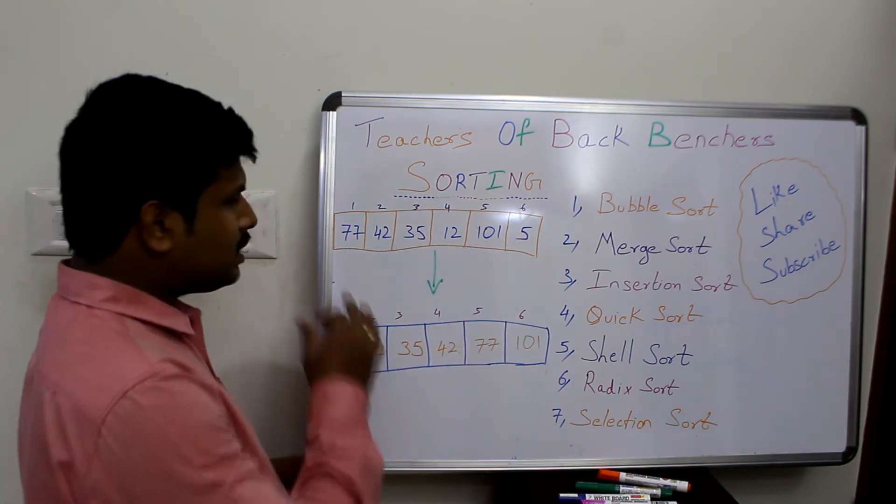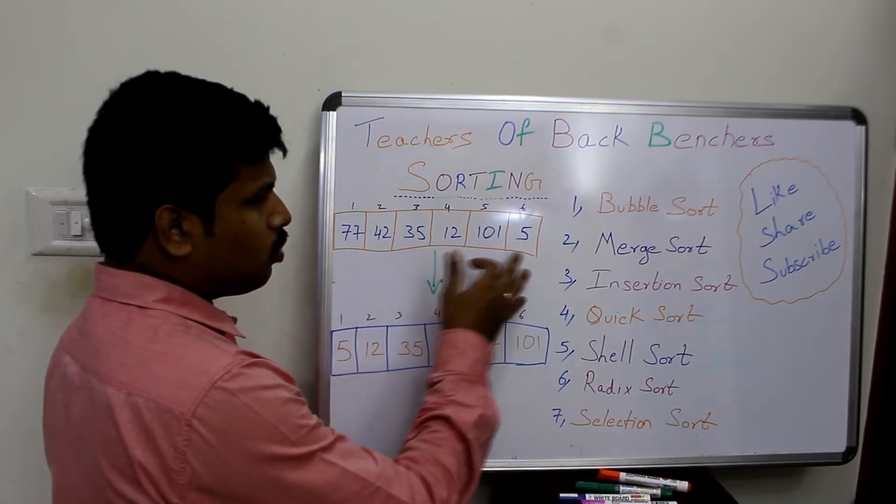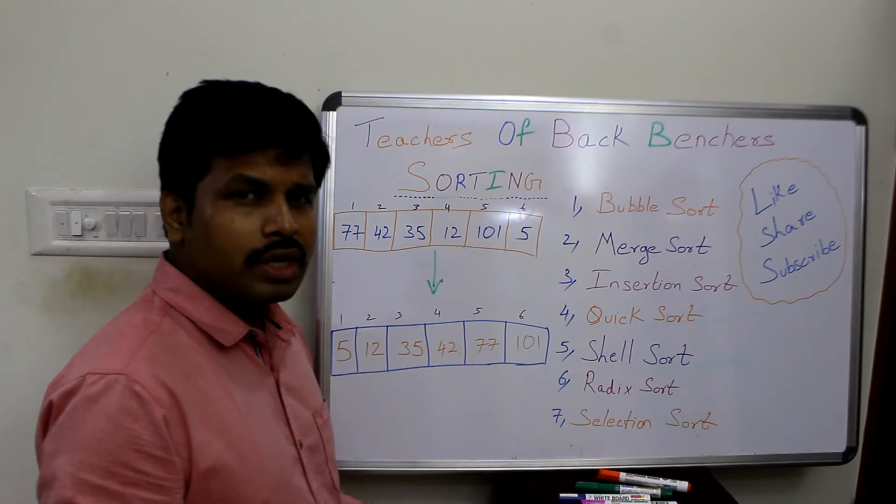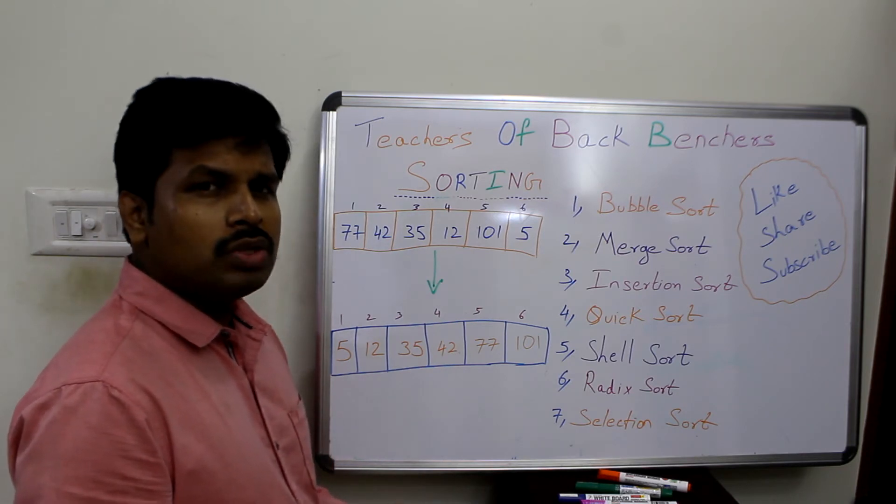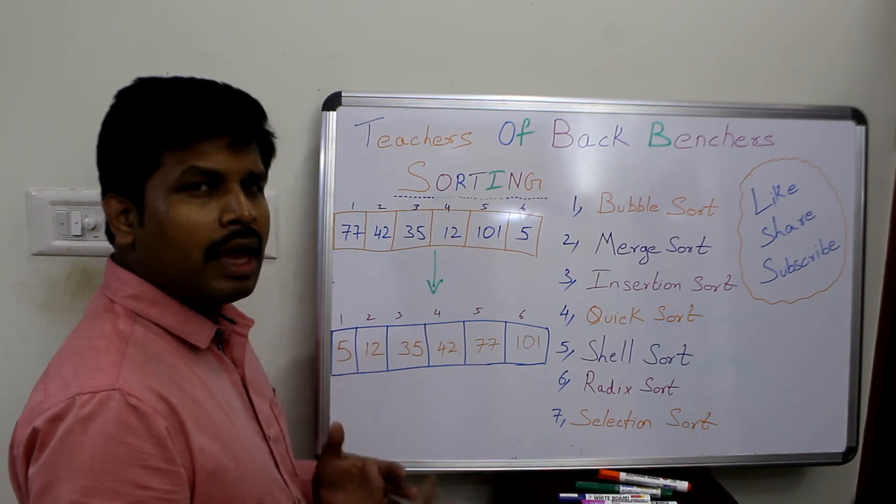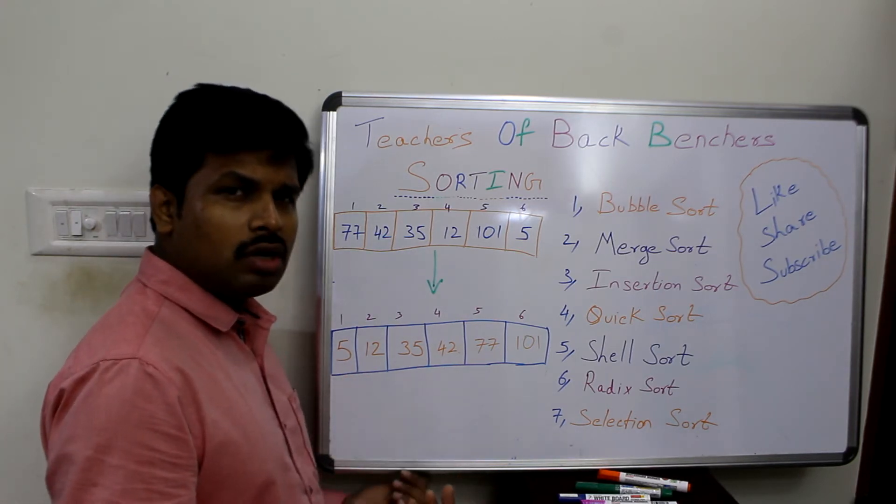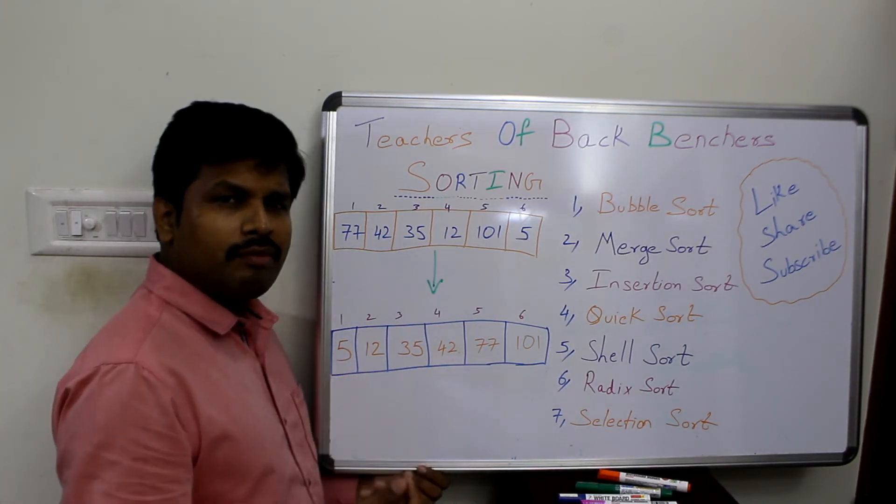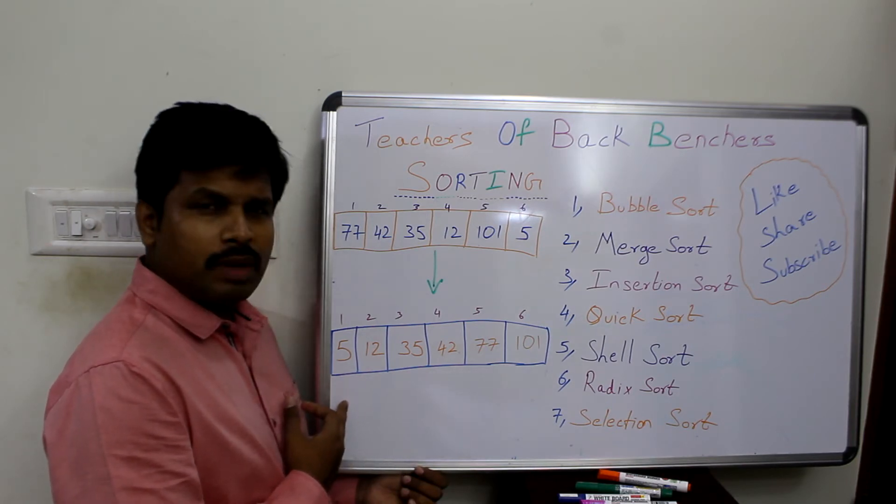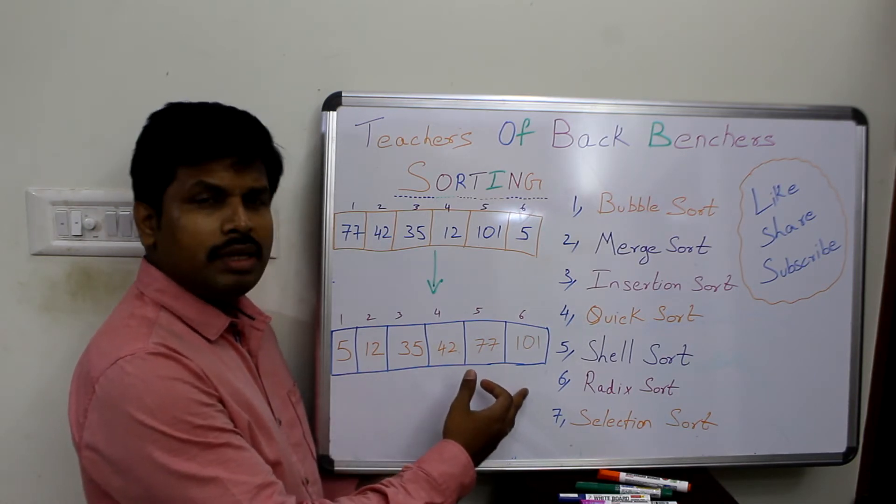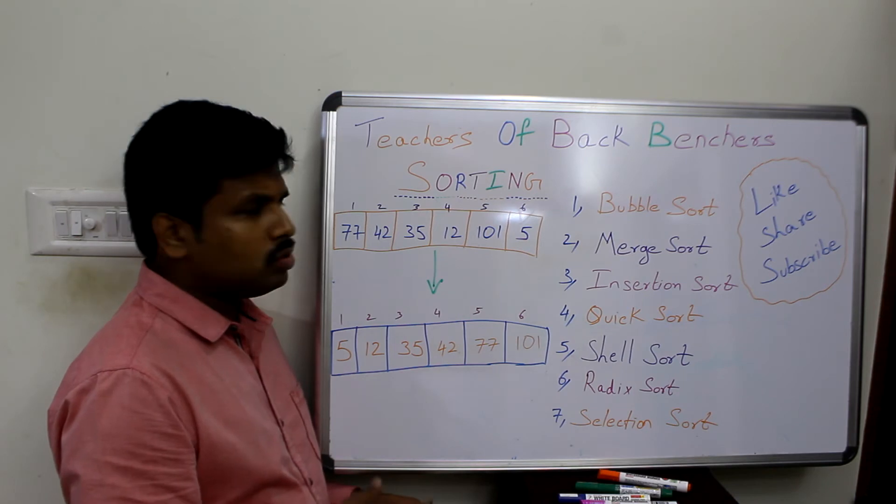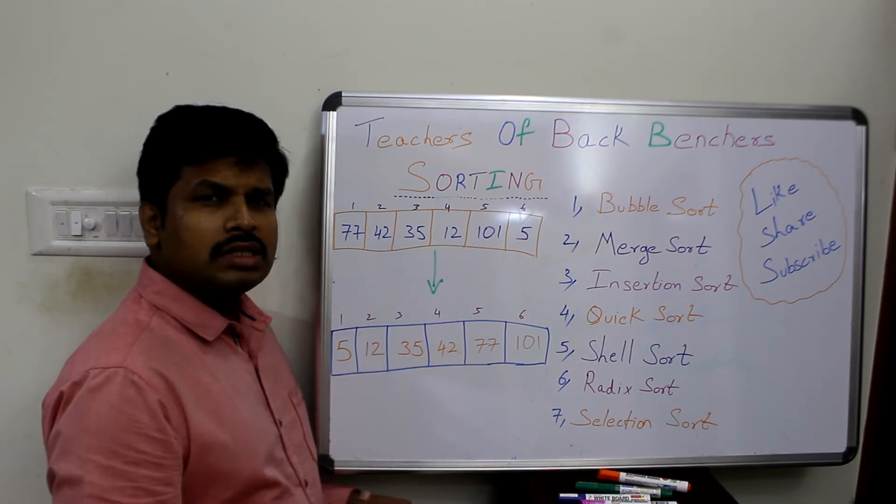Let's assume this is the given series: 77, 42, 35, 12, 10, 15. Six numbers are jumbled together. We are going to sort the given series. The final output, if it is ascending order, will have the minimum value in the first place and the largest value in the last place.